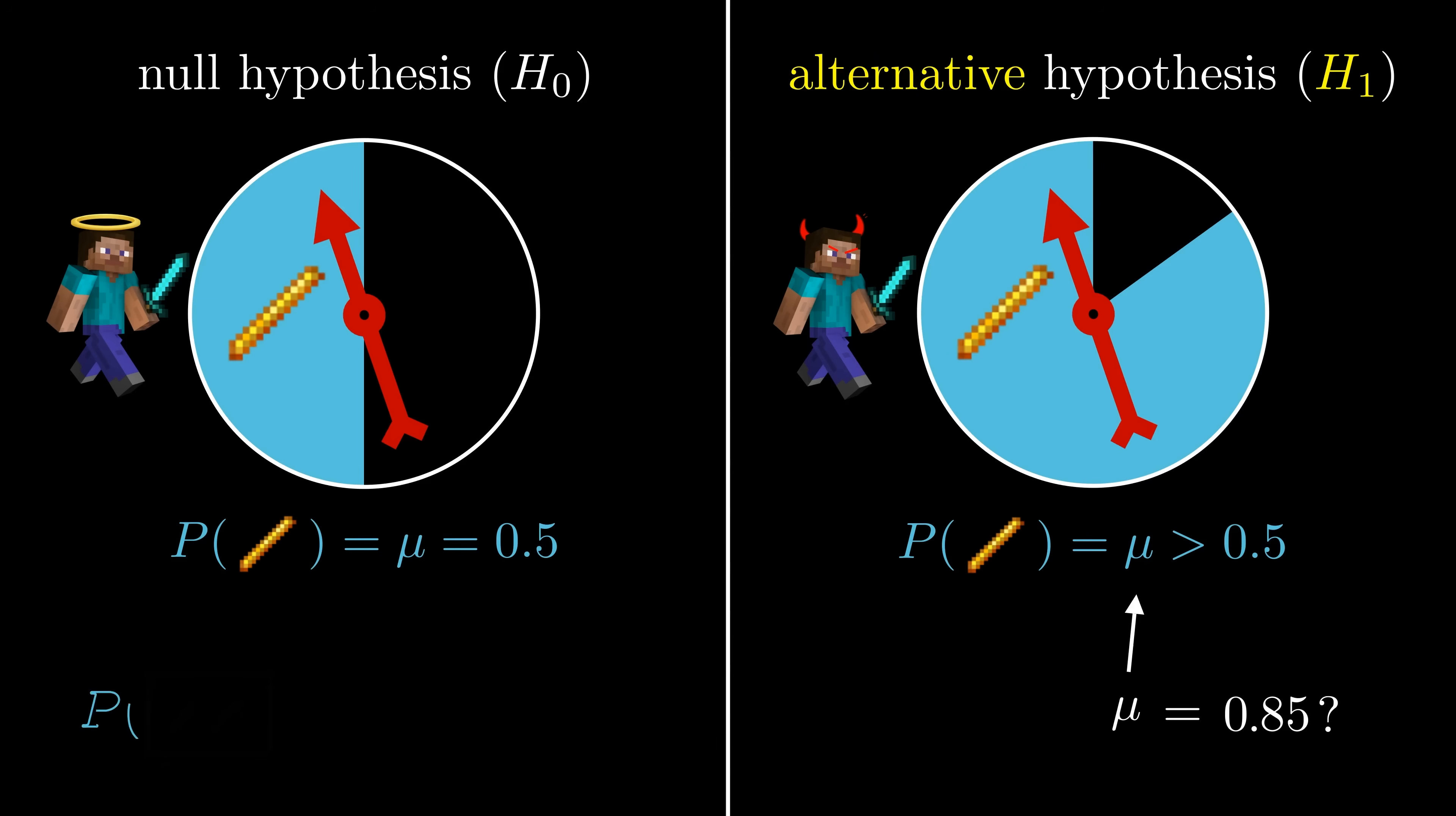For instance, we know that if you kill two blazes, you have exactly a 25%, or 1 in 4 chance, of collecting a rod from both blazes. So it's much easier to calculate probabilities in the null world than in the alternative world.